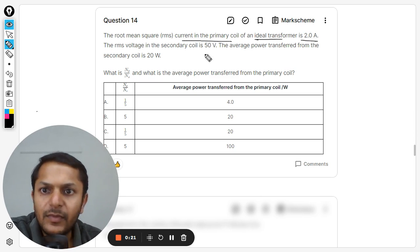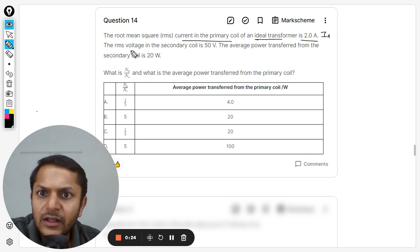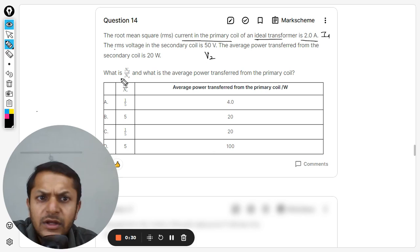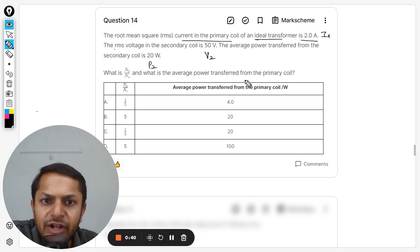So, the rms current is 2 amperes, the rms voltage in the secondary coil, this is v2, and the average power transferred from the secondary coil is 20 watts. So this is v2. What is np by ns, and what is the average power transferred from the primary coil?